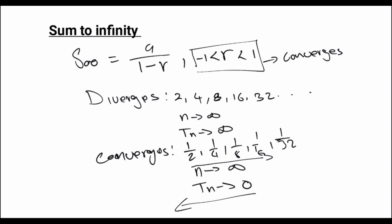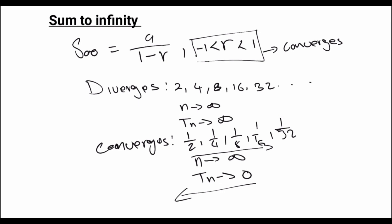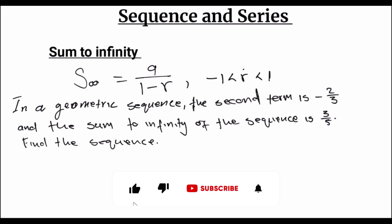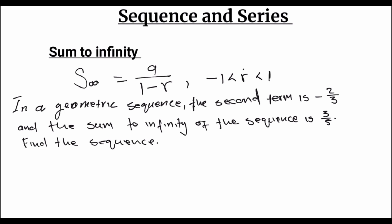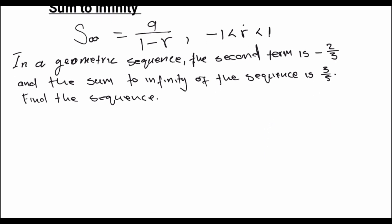We're going to look at an example to see how we can approach questions related to the sum to infinity. In this example, we are told that in a geometric sequence, the second term is negative 2 over 3, and the sum to infinity of the sequence is 3 over 5. We are asked to find the sequence.